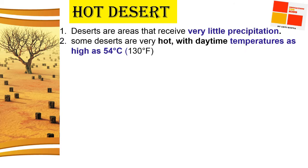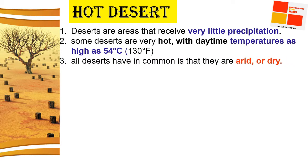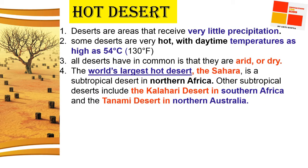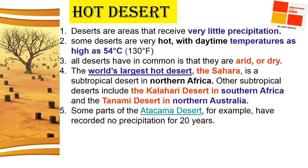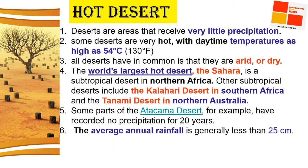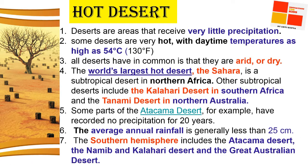Hot deserts are areas that receive very little precipitation. Some deserts are very hot, with daytime temperatures reaching up to 54 degrees Celsius. All deserts have in common that they are arid or dry. The world's largest desert is the Sahara Desert. The Kalahari Desert in South Africa and the Tanami Desert are subtropical deserts. Some parts of the Atacama Desert have recorded no precipitation for 20 years, and the average annual rainfall is generally less than 25 centimeters.